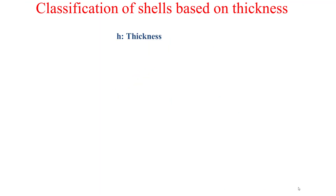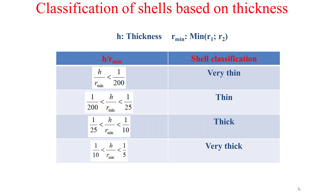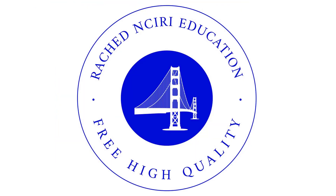Shells can also be classified based on their thickness. Considering h as the shell thickness and R_min as the minimum of the two principal radii of curvature, we classify the shell as very thin, thin, thick, or very thick based on the ratio h/R_min, as shown in the table in this slide.